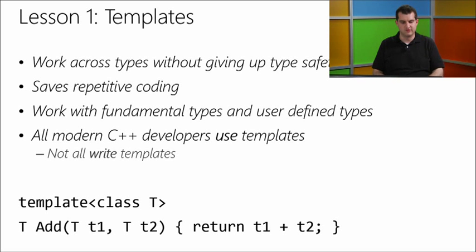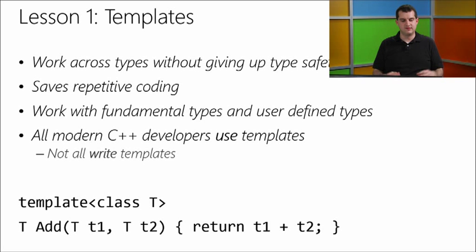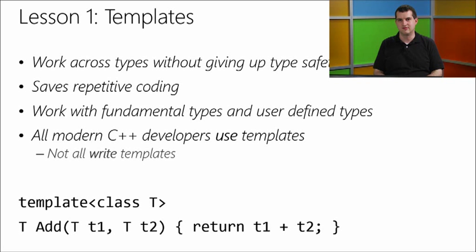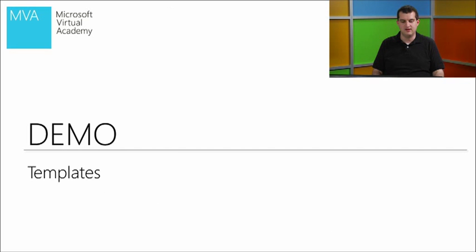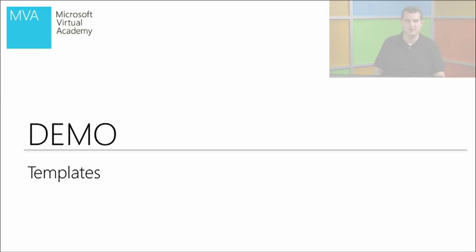Basically all modern C++ developers and all modern C++ code use templates. We've already seen some — our unique_ptr example in the last module used a template with angle brackets. The biggest advantage of templates is that you get compile-time genericity without sacrificing type safety. It's like a cookie cutter: when we want to call it with ints, we stamp out a new function that takes ints; with doubles, we stamp out one that takes doubles. We write the code only once and reuse it for any number of types.